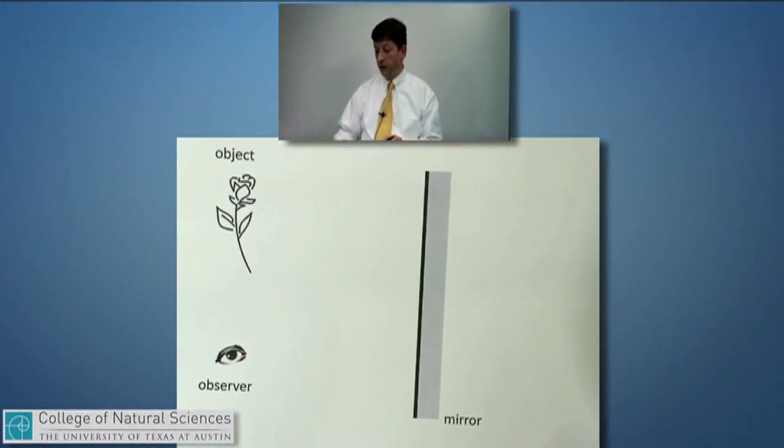We can try this exercise with some real objects and just ask ourselves what is it we would think we would see. If this is an object and here we are standing looking into a mirror, what is it we would think we would see looking into that mirror?